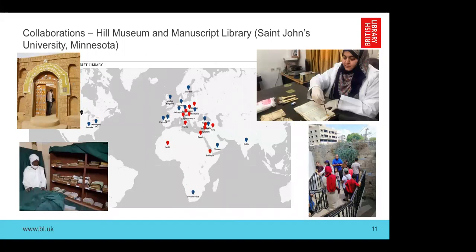Some of our most challenging projects have involved collaboration with other organizations, particularly with the Hill Museum and Manuscript Library. We have two particularly challenging projects at the moment: one in Timbuktu, where three libraries chose not to have their manuscripts go to Bamako when the jihadists entered, and the project is to digitize those manuscripts still in Timbuktu. We also have a project just awarded to digitize the manuscripts at Omari Mosque in Gaza. If you feel you'd like to apply but it's quite a challenging project, we do pair up with other organizations.